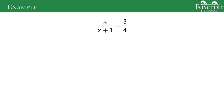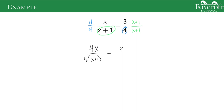Now we're going to do the same thing except with x's involved. The first thing we have to do is get the bottoms of these fractions to be the same. So we're going to take this 4 and multiply the left-hand side by 4, and take this x plus 1 and multiply the right-hand fraction by x plus 1. On the top we get 4 times x is 4x. On the bottom, I'll leave it factored for now. That minus gives us 3 times x plus 1, which is 3x plus 3 — I'll distribute that on top. On the bottom I'll leave it as 4 times x plus 1.